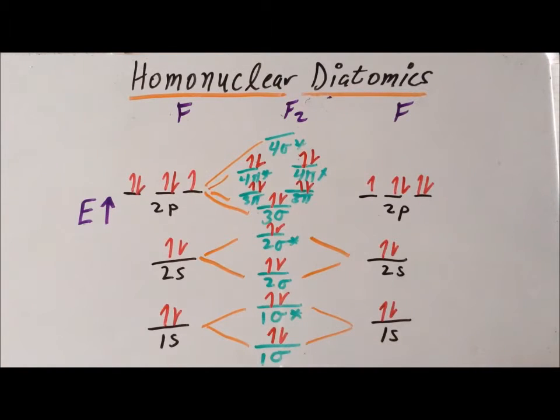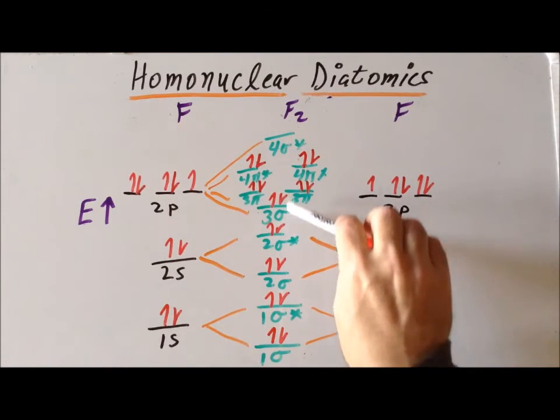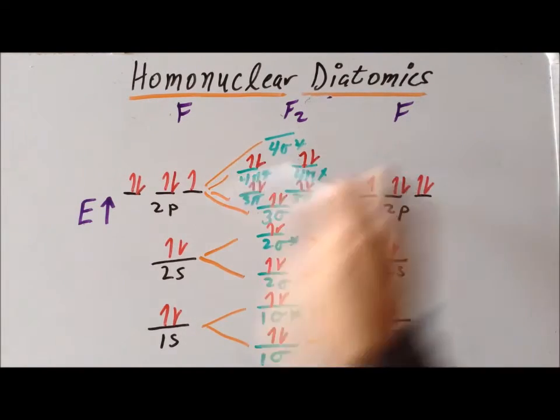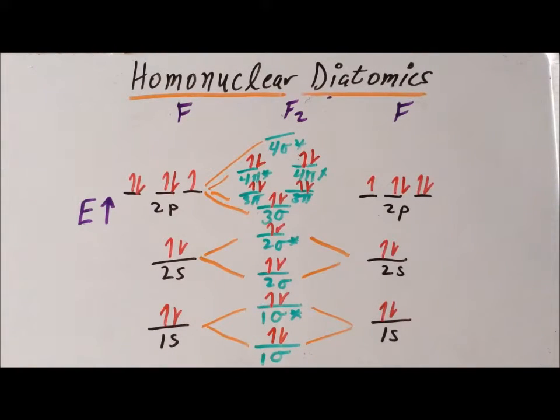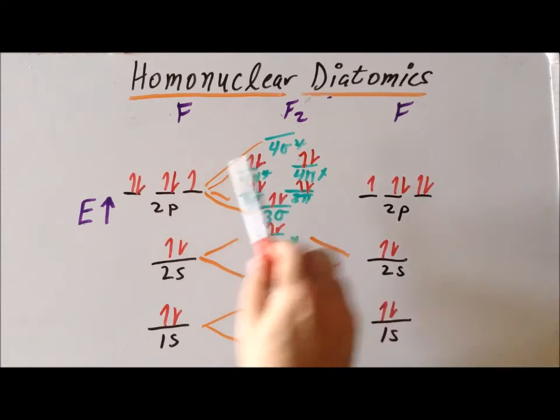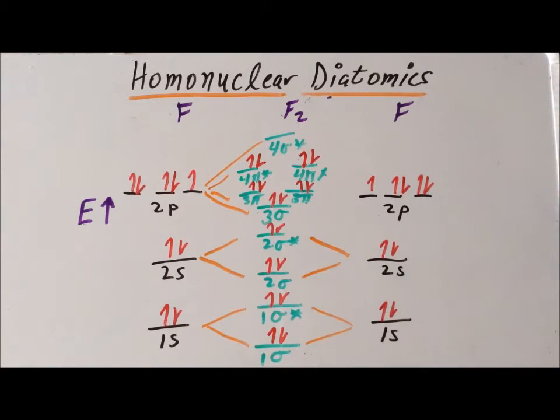And we double-check that we actually have 18 electrons here. We have 2, 4, 6, 8, 10, 12, 14, 16, 18. And we notice something immediately. If we just concentrate on the MO diagram, we notice that F2, difluorine, has exactly the same number of electrons in the same types of molecular orbitals as O2 2 minus, the peroxide ion. So therefore, we can say that difluorine and peroxide ion are isoelectronic.